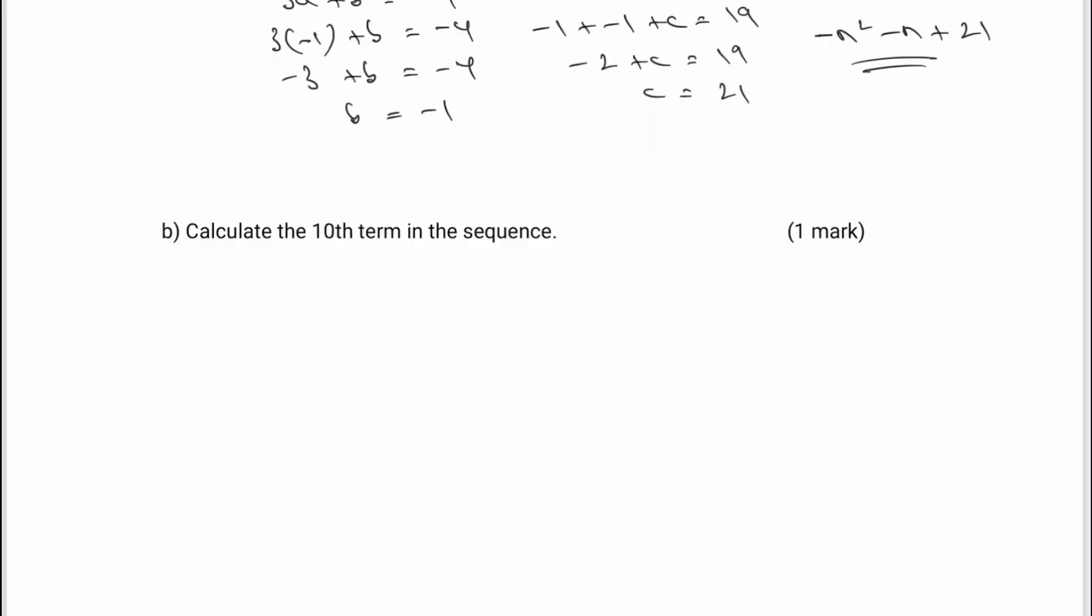Okay, so in part b of the question, I need to take this value of 10, and I'm going to put it directly into the nth term sequence. So I've got minus, and then n is going to be 10, and that's going to be squared minus 10 plus 21. Then really, it's just a case of working this out, but be very careful because we've got to use BIDMAS.